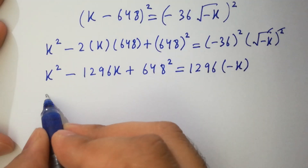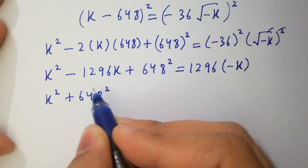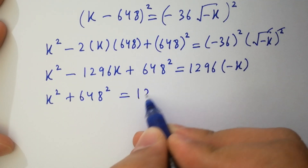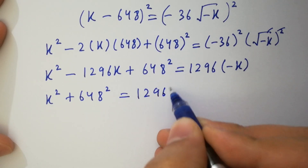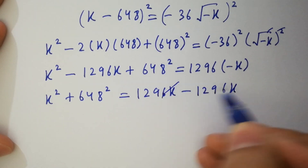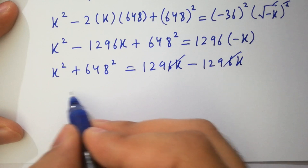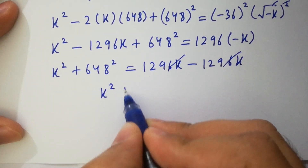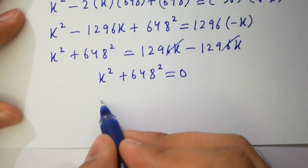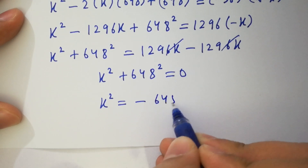On the right hand side we have plus 1296k and minus 1296k, which both cancel. So we have k squared plus 648 squared equal to 0. Therefore k squared equals minus 648 squared.